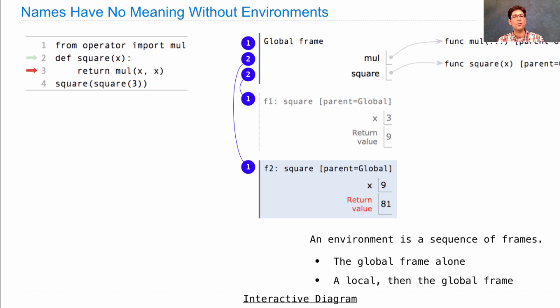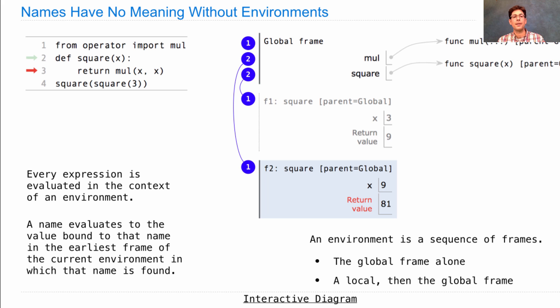These names, like mul and square and x, have no meaning without environments that tell us what they mean. So, every expression is evaluated in the context of an environment. And the environment is there to tell us what the names mean in that expression. A name evaluates to the value bound to that name in the earliest frame of the current environment in which that name is found. That should sound familiar, because I said it last time, and I told you it was really important. Here's a demonstration of what I mean. When we finally evaluate mul xx the second time around, when we've passed in 9 as an argument and created this frame, the current environment consists of two frames, this one called f2, and then the global frame, which is what I've tried to draw here.